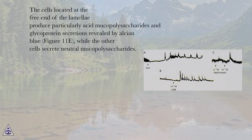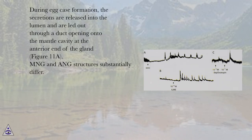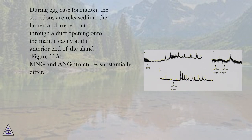The cells located at the free end of the lamella produce particularly acid mucopolysaccharides and glycoprotein secretions revealed by Alcian Blue, figure 11e, while the other cells secrete neutral mucopolysaccharides. During egg case formation, the secretions are released into the lumen and let out through a duct opening onto the mantle cavity at the anterior end of the gland, figure 11a.